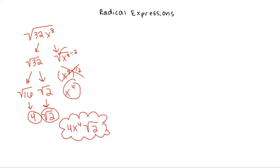If you were ever unsure if you actually simplified correctly, you could go back to the original problem and pick a number to substitute in for the variable x, get a number, then plug in the same number for x in your answer and check that you get the same thing. It won't tell you if you have it perfectly simplified, but it will let you know that you didn't make any major mistakes along the way. We're going to go ahead and do a couple more examples of just simplifying these roots.